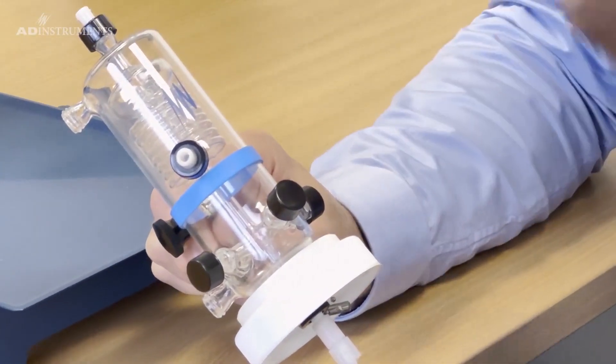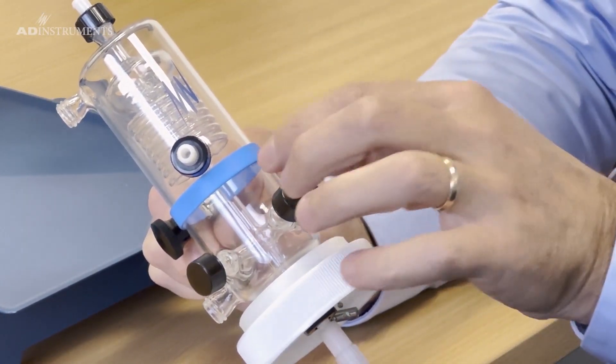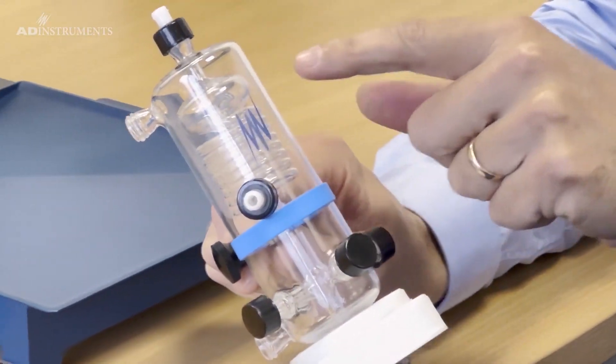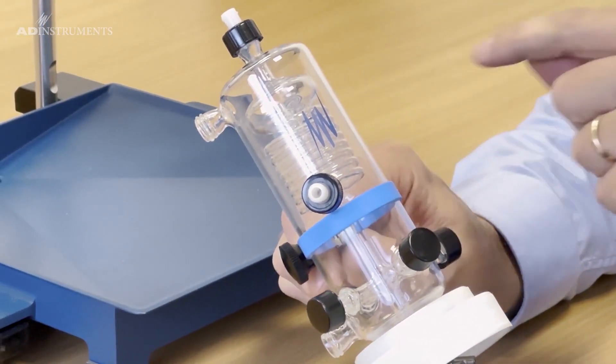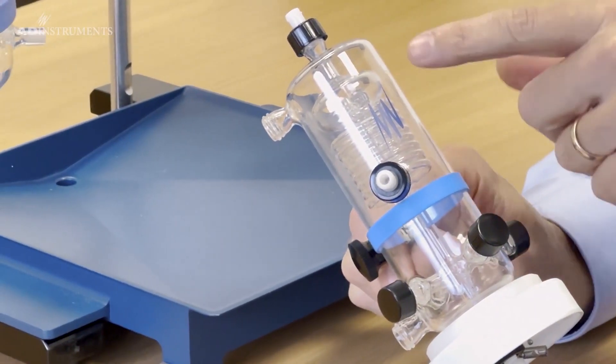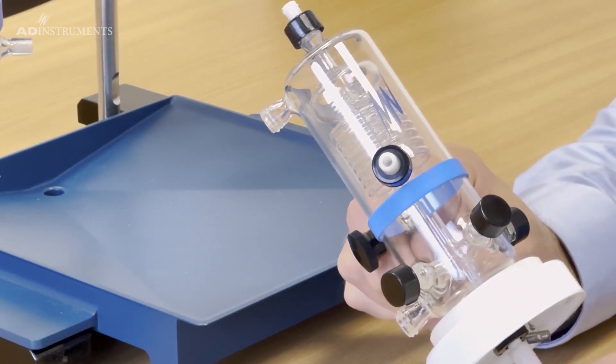The perfusate comes in through this port, goes around the coil to be reheated by the water jacketing, and then at the top there is a bubble trap. This is to remove any bubbles which may form before it goes down into the heart.